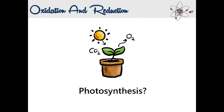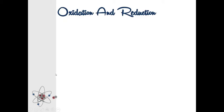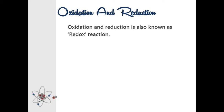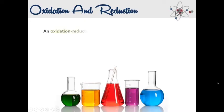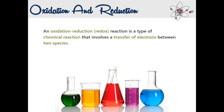Let's take a look at the definition of oxidation and reduction. Oxidation and reduction is also known as a redox reaction. Redox reactions are common and essential to some of the basic functions of life, including photosynthesis, respiration, formation of brown apple, and corrosion or rusting of matter. 'RED' in redox stands for reduction while 'OX' stands for oxidation. An oxidation-reduction reaction is a type of chemical reaction that involves a transfer of electrons between two species — oxidation and reduction happen when an electron moves between atoms or compounds.